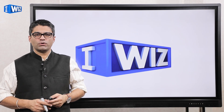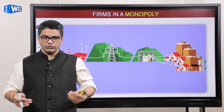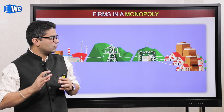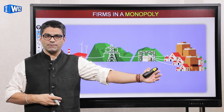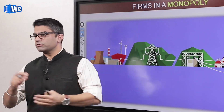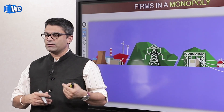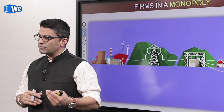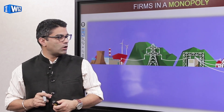Hey guys, hope you're doing well. Now we're going to start a brand new topic on a different kind of market structure. We've talked about perfect competition a lot, and hopefully you're comfortable with that — that's at one extreme end. Now we're going to look at the other extreme case, which is monopoly, and then the cases in between — monopolistic competition and oligopoly — we'll talk about after we're done with monopoly.